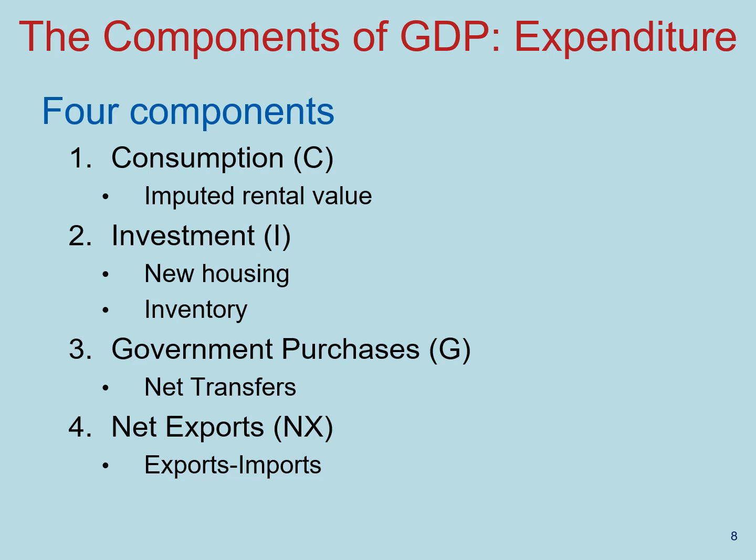Moving to investment: new housing construction is part of investment, not consumption. Another special category is inventory — products that are manufactured in a particular year but not sold in that same year. That inventory remains classified as such until it's sold, and then it's switched to the appropriate category — consumption, investment, government purchases, or net exports — in the year it was sold. This lets us keep track of products manufactured in a particular year and adjust those accounts in the year they were sold.